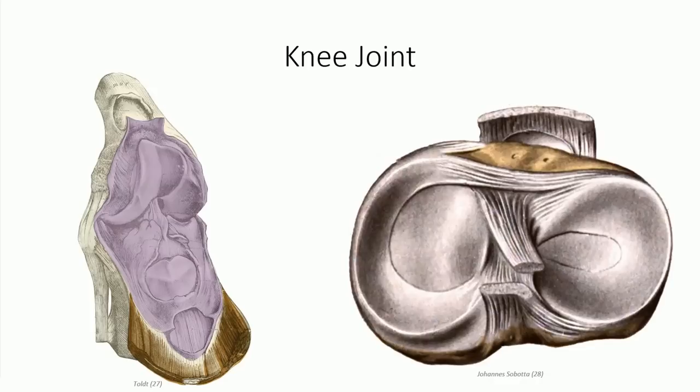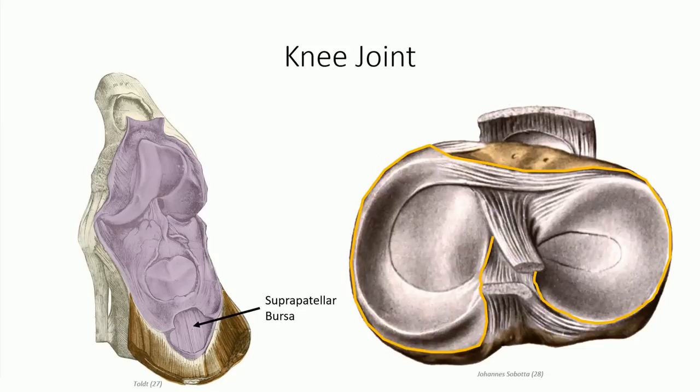The internal structure of the joint capsule shows how the patella is incorporated into the anterior joint capsule, and also reveals the synovial cavity, which lines all non-articulating surfaces. It extends superiorly as the suprapatellar bursa, creating slack in the joint capsule during extension so the capsule can stretch during flexion without damaging the synovial membrane. In the axial view, the synovial membrane runs around the cruciate ligaments. Even though the cruciate ligaments are intracapsular, they are extra-synovial — not found within the joint cavity itself.